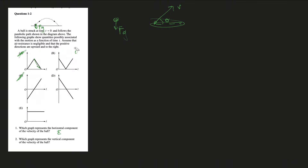Number two: which graph could possibly represent the vertical velocity of the ball? The force of gravity is constant throughout, so the vertical component of velocity must have a constant slope — constant acceleration. Options A and B have changing slopes implying varying acceleration, which is impossible. E implies zero acceleration, but acceleration must equal g, so E is wrong too. We're narrowed down to C and D. Since positive direction is upward and our initial velocity was upward, we must start at a positive y-intercept. C starts negative at t equals zero, so it can't be C. The answer is D.